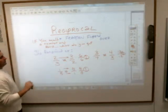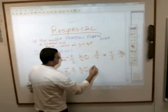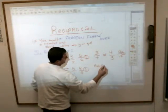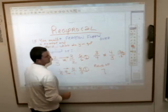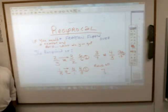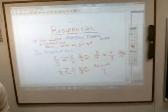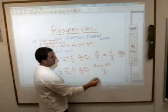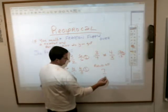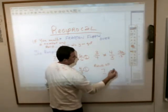Now, a couple things. First of all, what would be the reciprocal of seven? What would be the reciprocal of the number seven? Jacob? Seven over one? No, that's what the number seven actually is. Oh, one over seven? Right. Seven over one is one over seven.